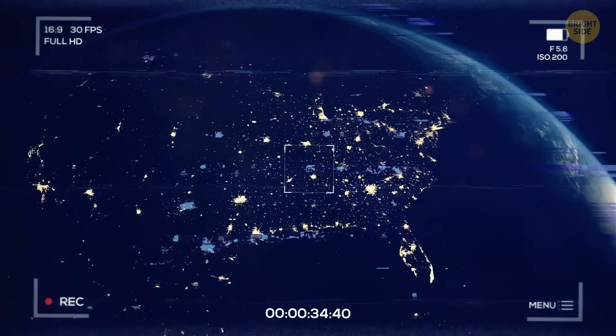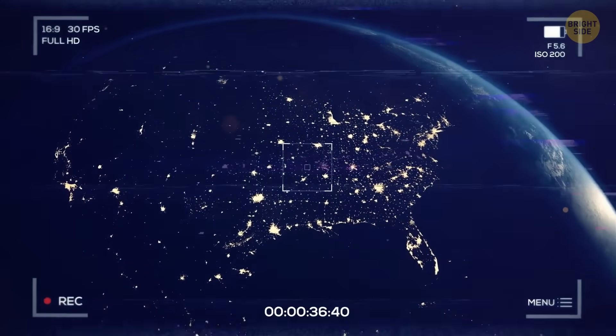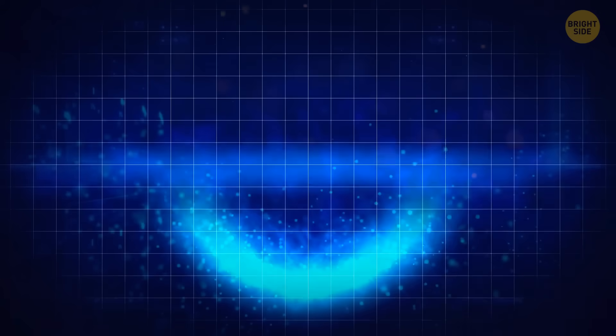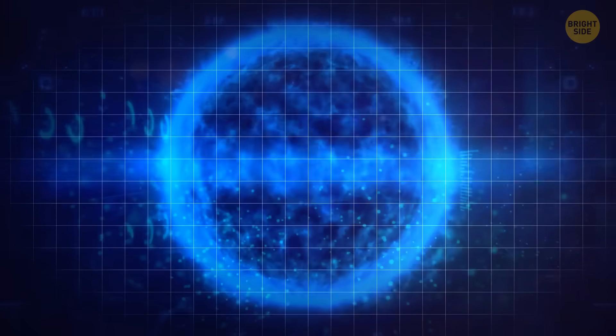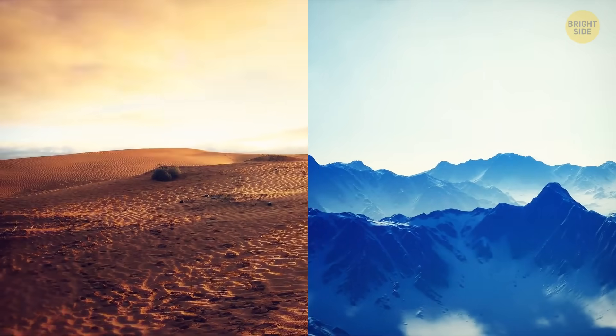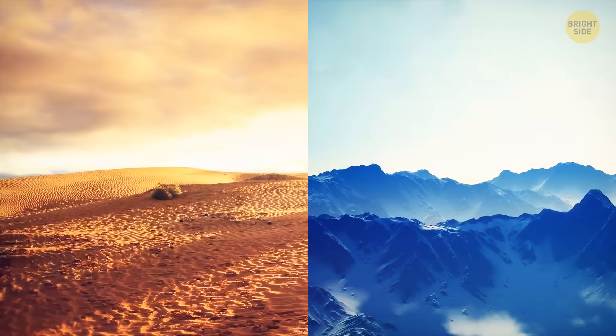Imagine what would happen when our planet becomes the size of the sun itself. Less sunlight means that we'd probably need an artificial sun. Also, the temperature differences on the planet's surface would be huge.